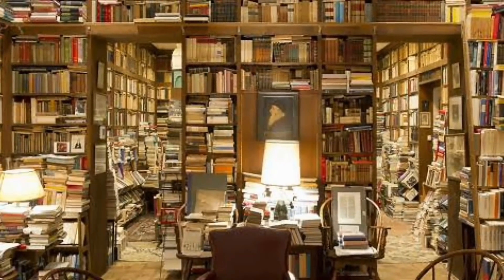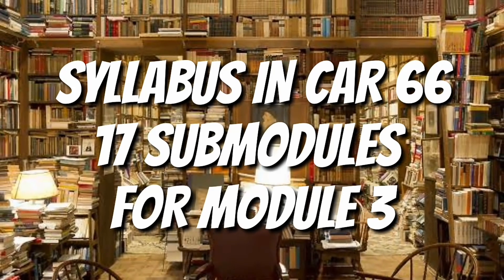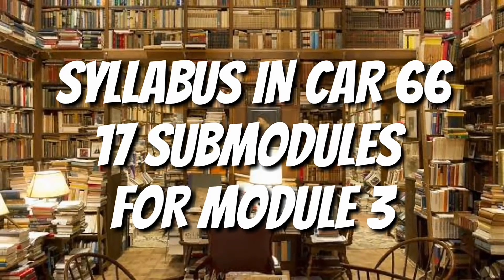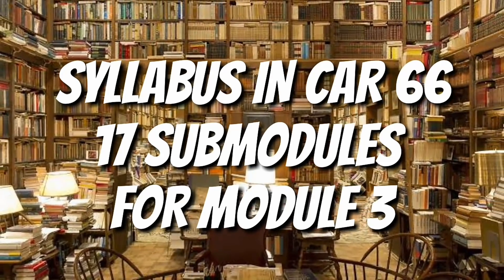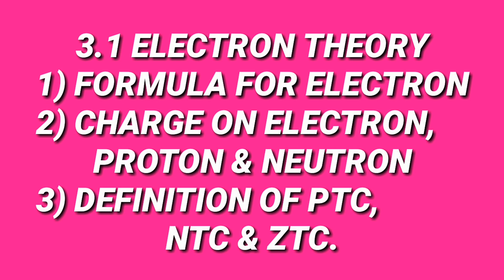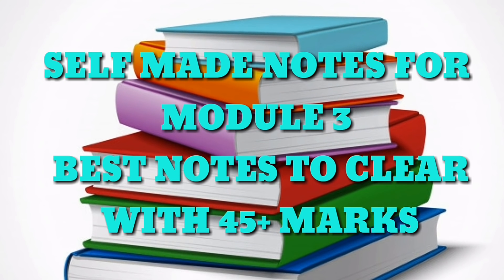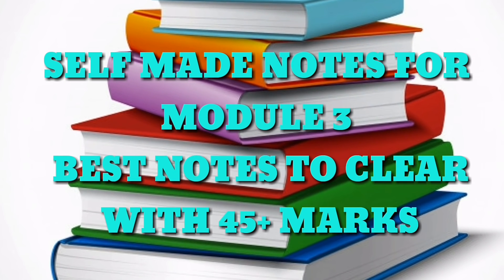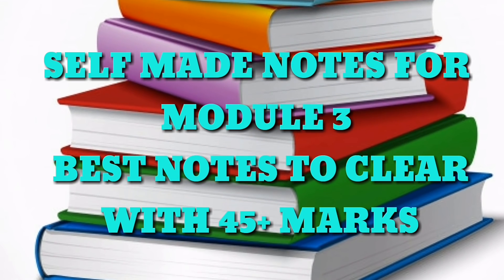As we go through the syllabus of DGCA, we see there are 17 sub-module topics for Module 3, but remember each and every topic is important. Starting with 3.1, we have electron theory. In this you need to remember that the electrons in a shell are filled by the formula 2n squared. Also the charge on electron, proton and neutron, the definition and the material of PTC, NTC and ZTC. Everything is given in my notes specially made for Module 3, and I scored 46 out of 52 in my module exam using these self-made notes, and I want you to score good marks as well.